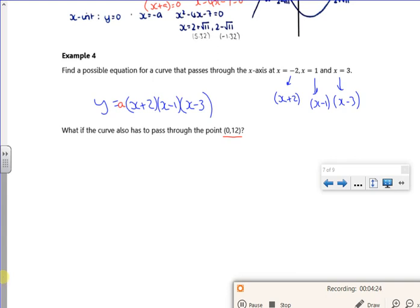So if you think on this, if x is 0, I've got 0 plus 2, I've got 0 minus 1, I've got 0 minus 3, with that a in front of it, and that's equal to 12. So essentially I've subbed in 0 and 12. So that would give me 6a equals 12, so a must be 2. And we've kind of done stuff like that before.